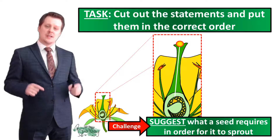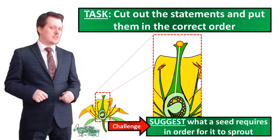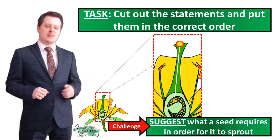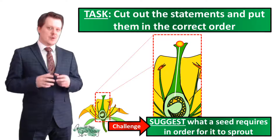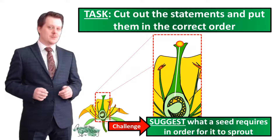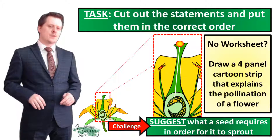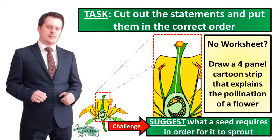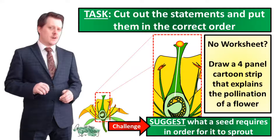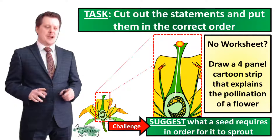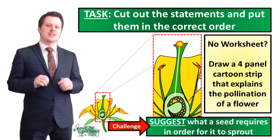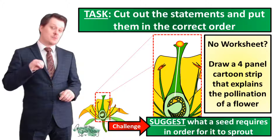For our first task you're going to need the worksheet which you can download below. Cut out the statements and arrange them in the correct order to explain how a plant becomes fertilized. If you haven't got a worksheet, draw a four-panel cartoon strip explaining the pollination of a flower. For a challenge, suggest what a seed requires in order for it to sprout.